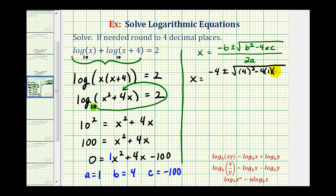times c, which is negative 100. And this is all divided by two times a, or two times one. Now we'll begin to simplify.